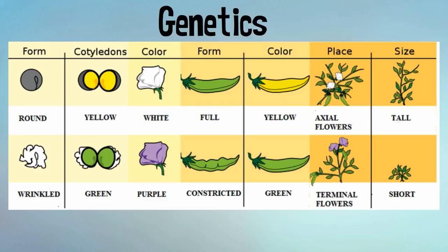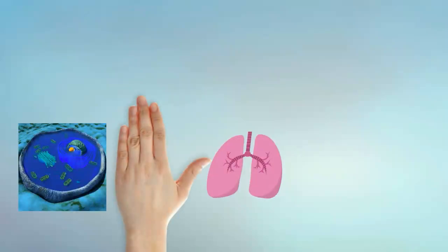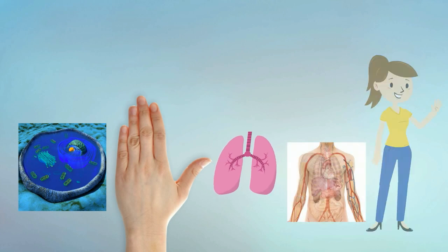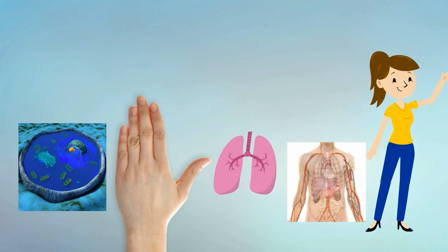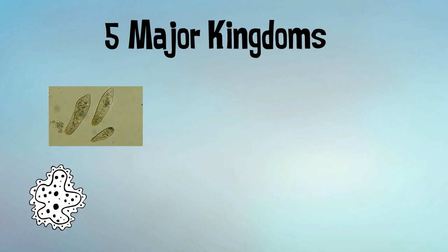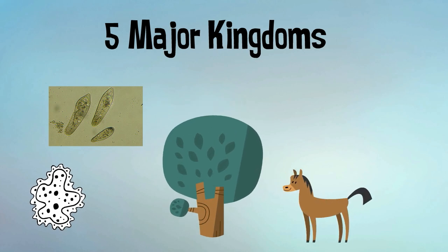Organisms that are alive can take many shapes and sizes. Cells of these organisms make tissues, tissues make organs, organs make organ systems, and organ systems make organisms. Organisms are also divided into five major kingdoms: the monera, which include bacteria, protists, plants, animals, and fungi.